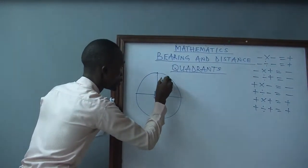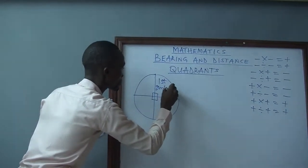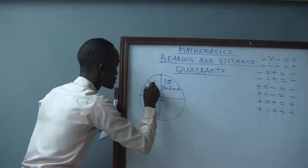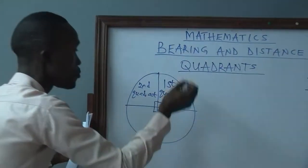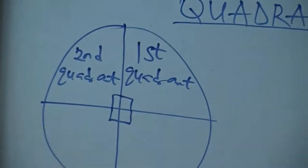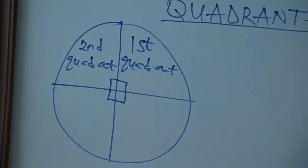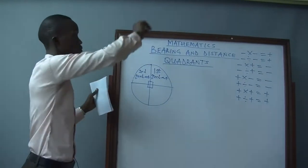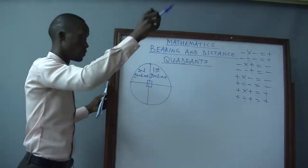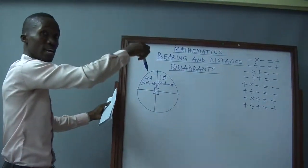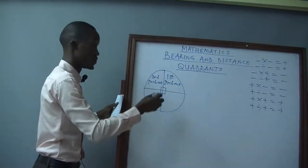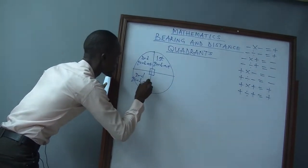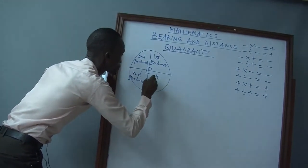This part we call the first quadrant, this second one we call the second quadrant. Our movement is anti-clockwise — the other way around from the clock's movement from 12 to 12. This one we call the third quadrant, and this one we call the fourth quadrant.